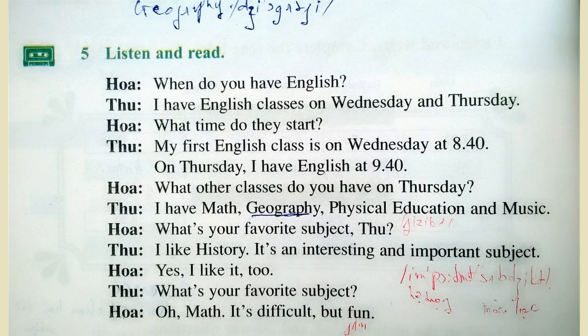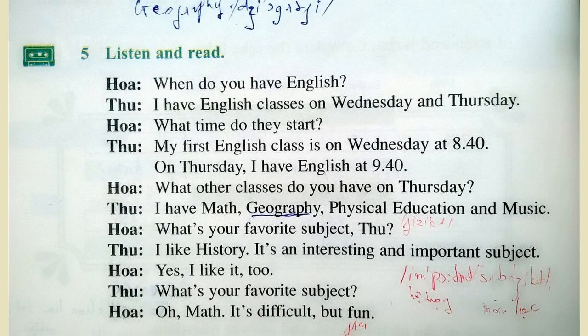Listen and read, page 46. When do you have English? I have English classes on Wednesday and Thursday. What time are they? My first English class is on Wednesday at 8.40. On Thursday, I have English at 9.40. What other classes do you have on Friday? I have math, geography, physical education, and music. What is your favorite subject, Hu? I like history — it's an interesting and important subject. Yes, I like it too. What is your favorite subject? Oh, math. It's difficult but fun.